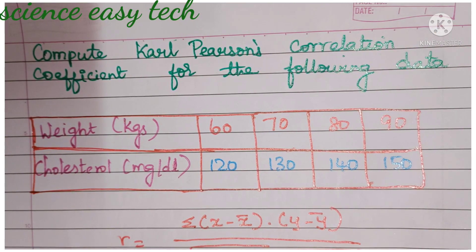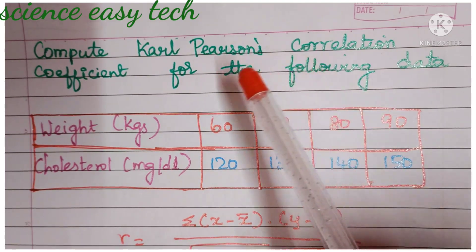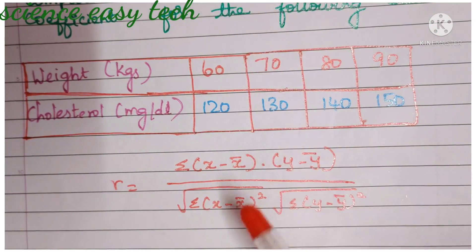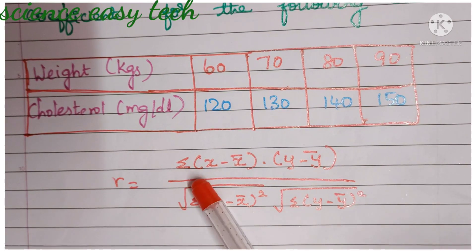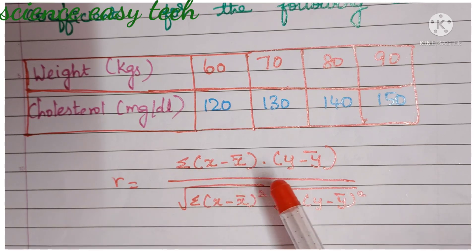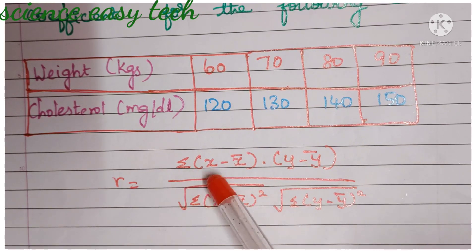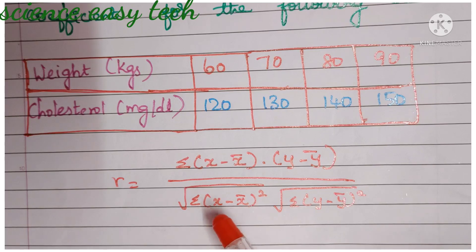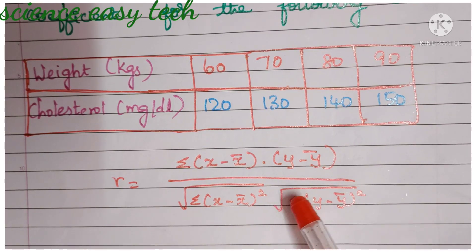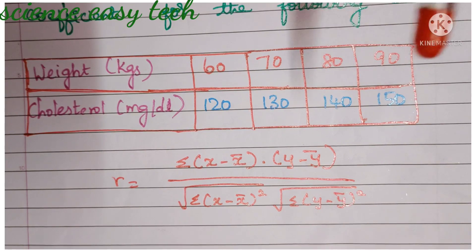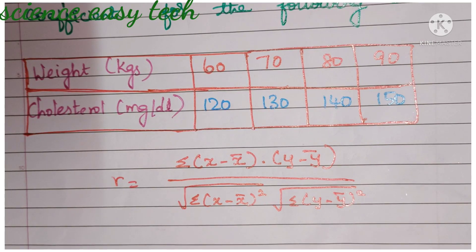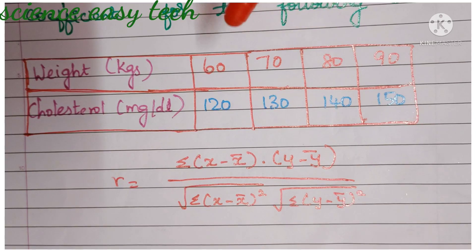The formula for coefficient of correlation by Karl Pearson method is: r = Σ(x − x̄)(y − ȳ) divided by the square root of Σ(x − x̄)² multiplied by the square root of Σ(y − ȳ)². The detailed video, as I mentioned earlier, is already posted — you can watch it on our channel playlist for Karl Pearson correlation coefficient in statistics.